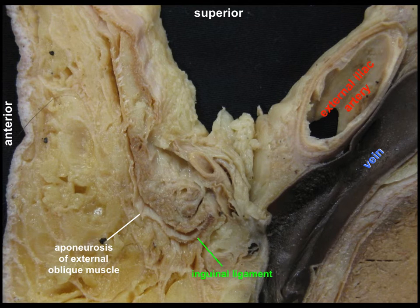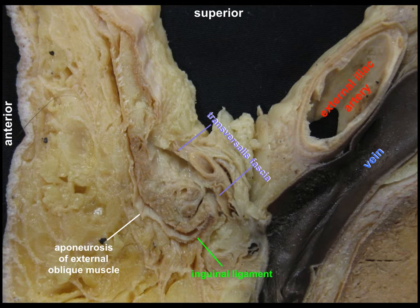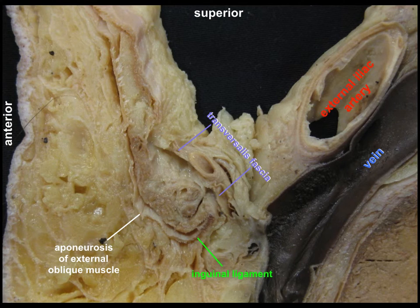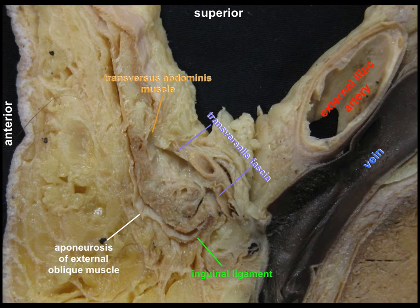The next layer that is important for us is the dorsal border of the inguinal canal, indicated with purple arrows. This is the transversalis fascia. The last border is the upper border of the inguinal canal, which is the lower end or lower rim of the transverse abdominus muscle.